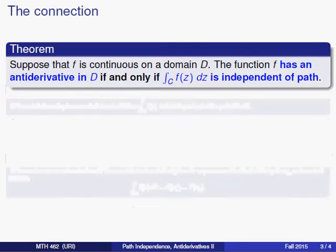And the connection is this: suppose that f is continuous on a domain D. Then the function having an anti-derivative will happen if and only if the function's integral is independent of the path taken between the two endpoints.